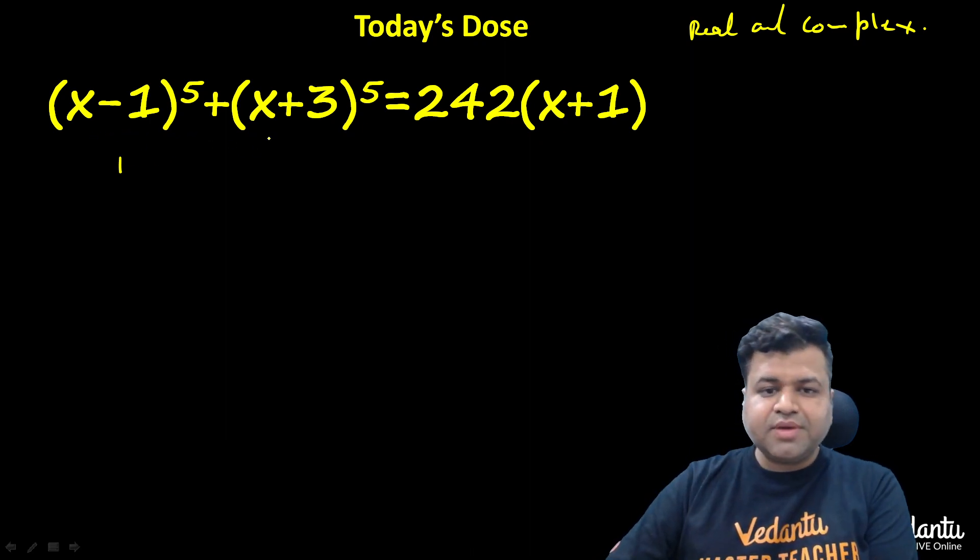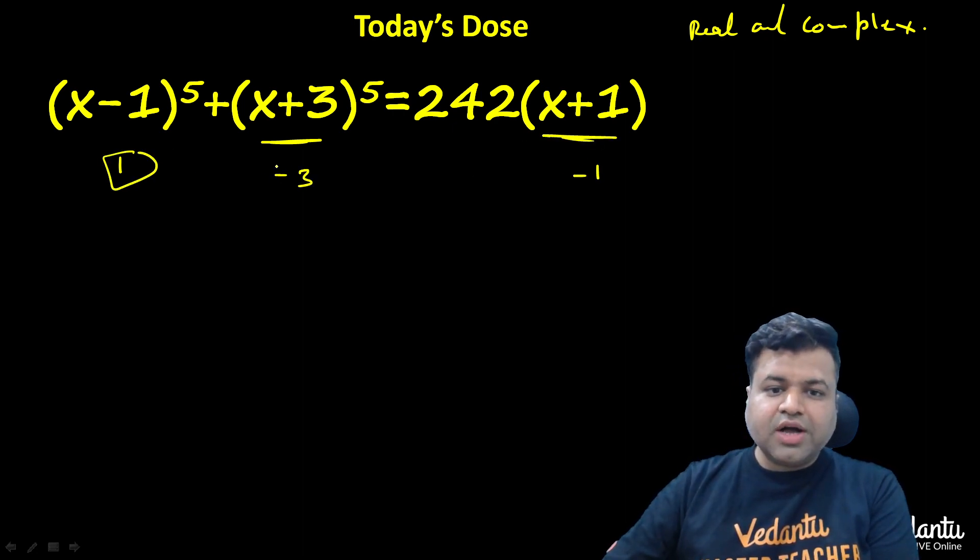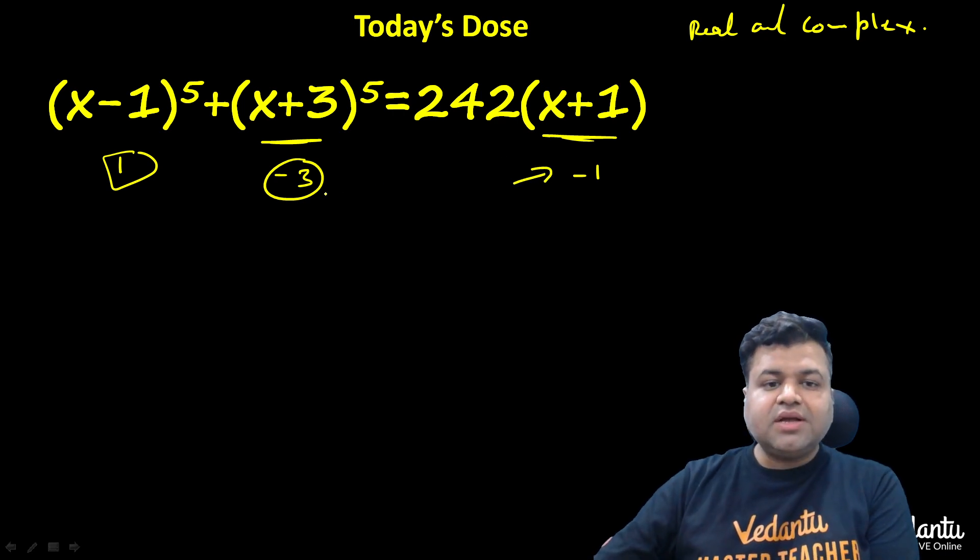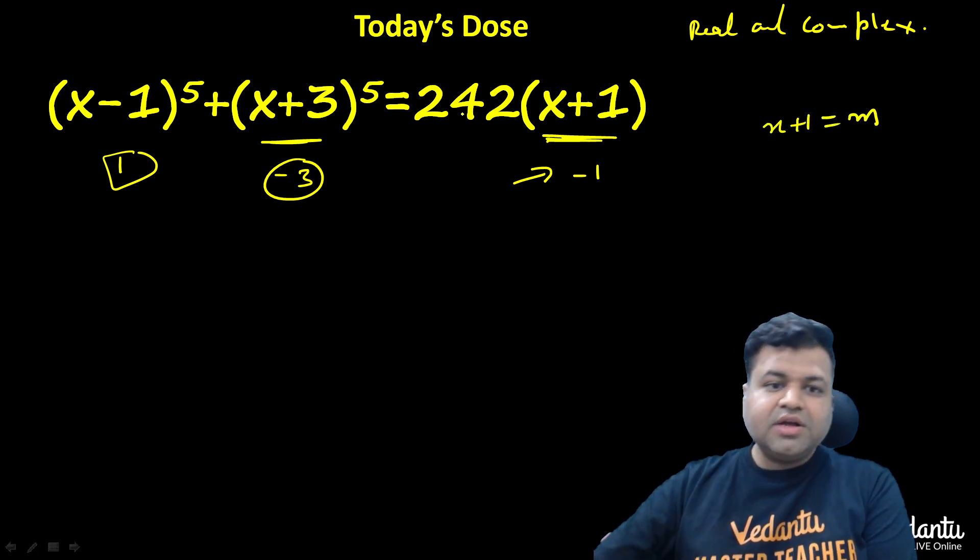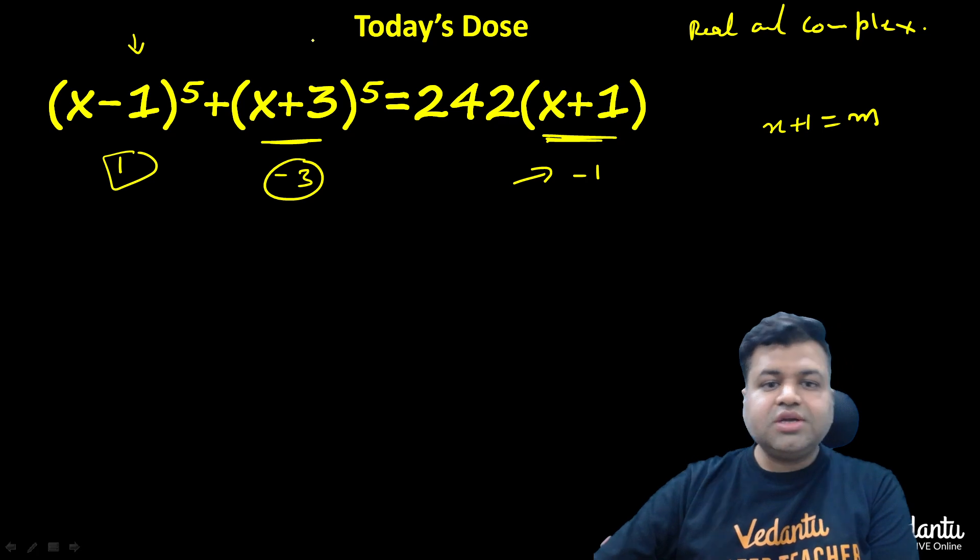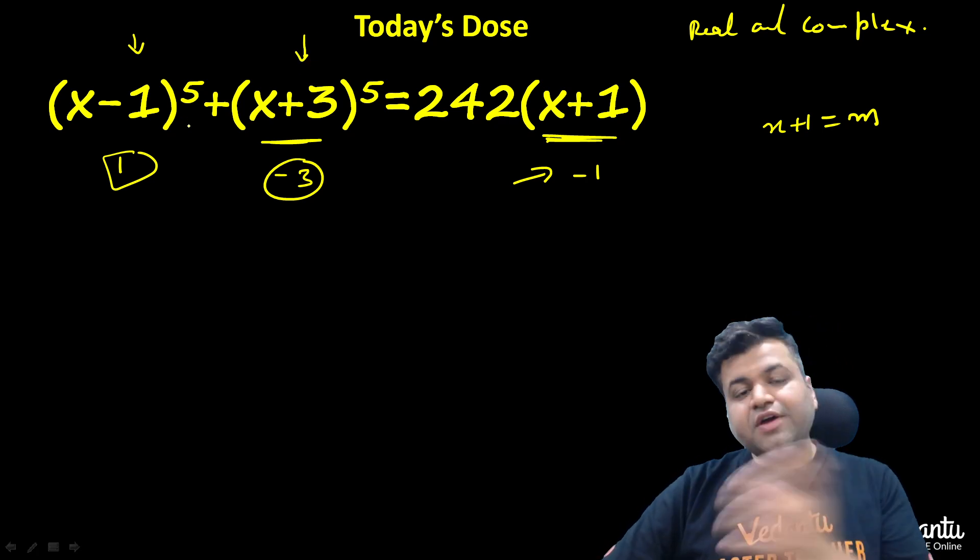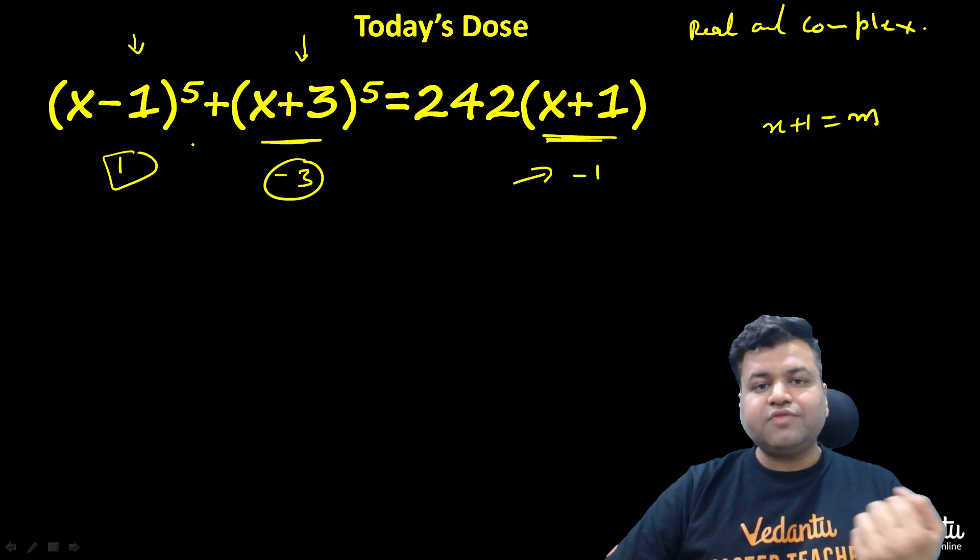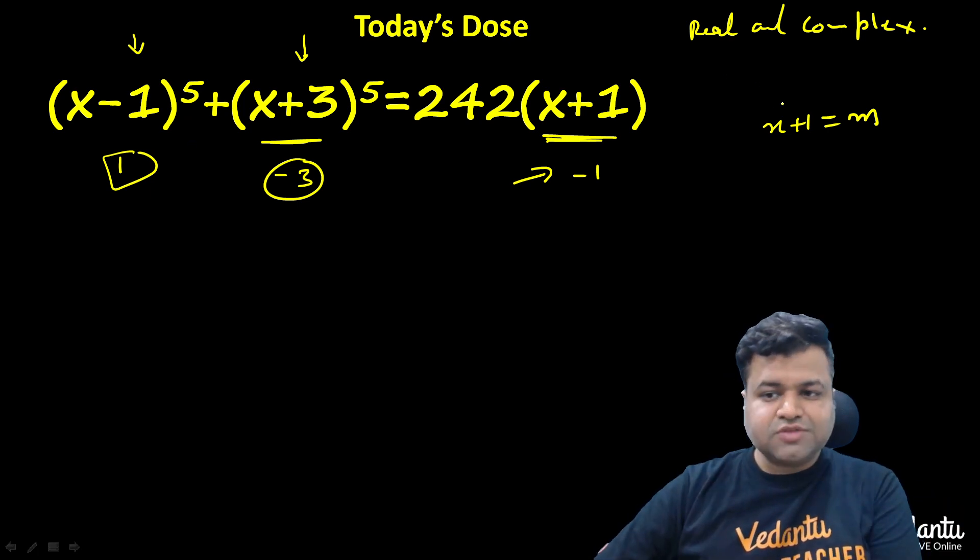If you do hit and trial in this question, you will find some solutions. But if I average the values, let's assume x+1 is equal to m. So the average is far away. That means when we add the power 5, when we add a lot of values, it will cancel out. What I am trying to say is x+1 equals m.